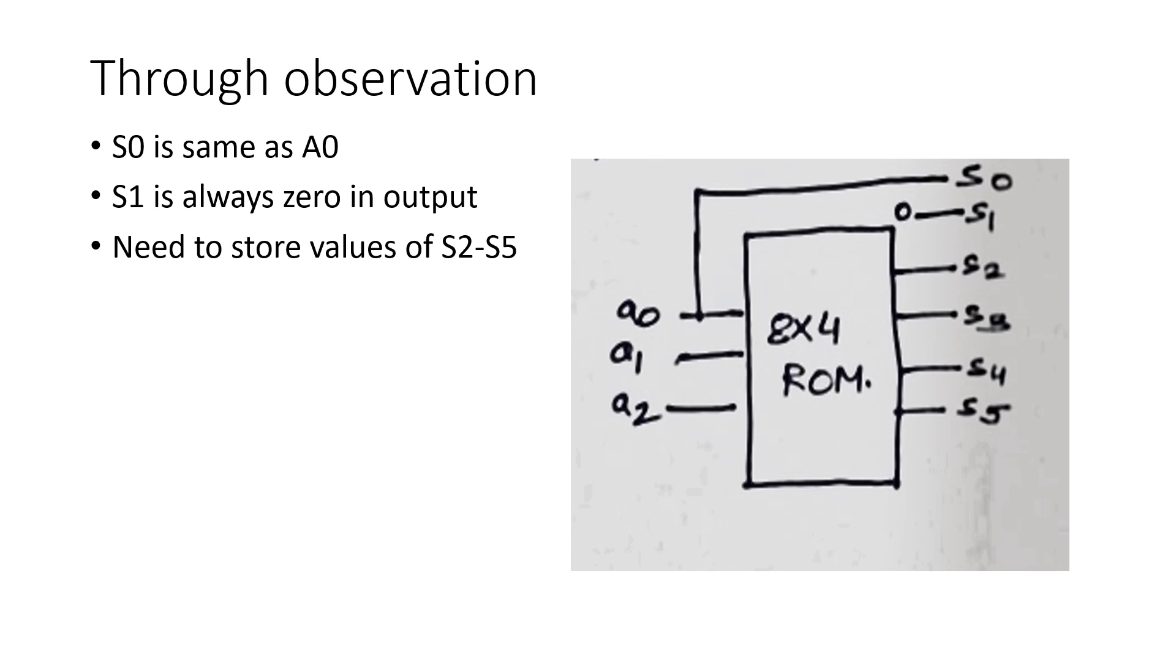Now, we have to implement this circuit using a ROM or PROM. You can see there are three input lines A0, A1, A2. Accordingly, we will be needing a ROM in which there are three address inputs. Three address inputs will give in all eight memory locations to us. For this particular circuit, we are going to need six output lines, S0 to S5. But we have seen through observation that S0 is same as A0 and S1 is always 0. So, instead of using a ROM with six data lines, we will be using a ROM with only four data lines and whatever information is there for S2, S3, S4, S5 in that truth table, that information will be stored in a ROM. Along with that, we will be connecting S0 to A0, S1 to ground, giving us a circuit with which output is square of three bit input number.